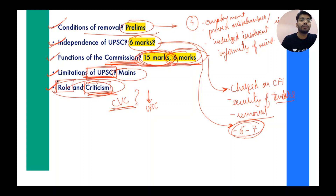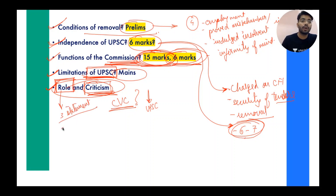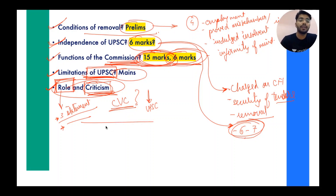Ultimately, UPSC is called the watchdog of the merit system. If a question comes on the role of UPSC or State PSC, write at least three statements — that it is the watchdog of the merit system, it is an independent body conducting exams and bringing administrators into services. This is a very easy chapter. Once you read it, just revise it. This was the strategy for studying UPSC. The full details on functions and role will be covered in the Unacademy class — the link will be shared in the description soon. Thank you so much.